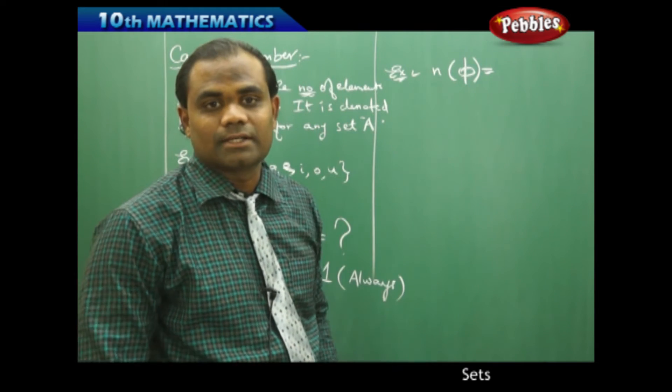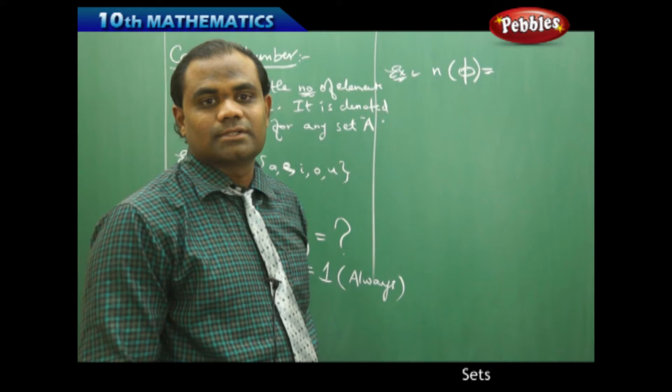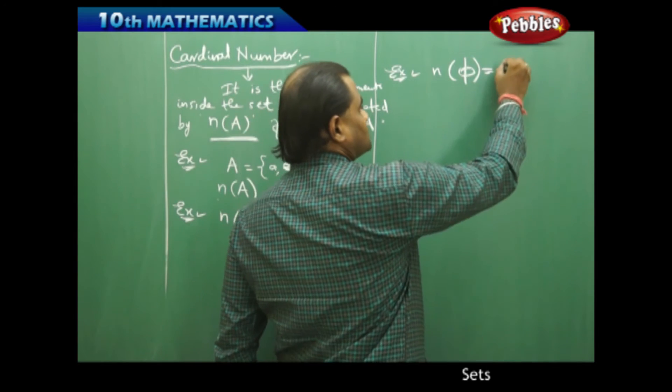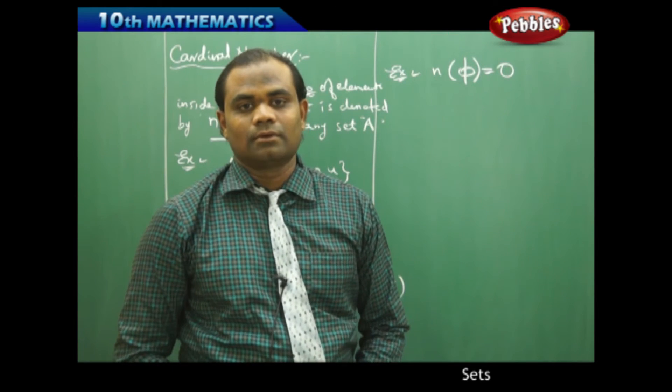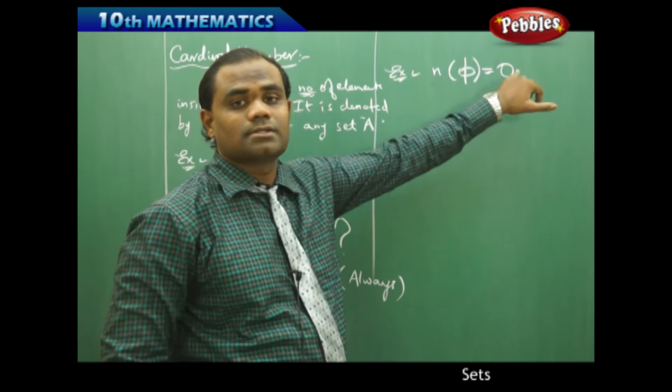The number of elements mathematically in a null set is 0. Therefore, the cardinal number of a null set is 0, and hence n(φ) equals 0.